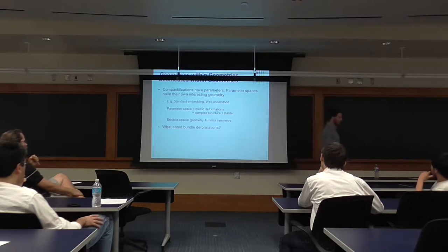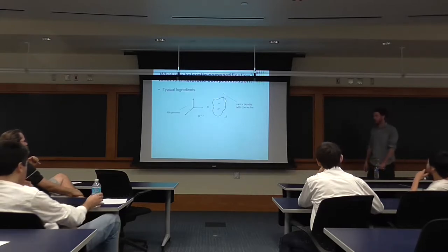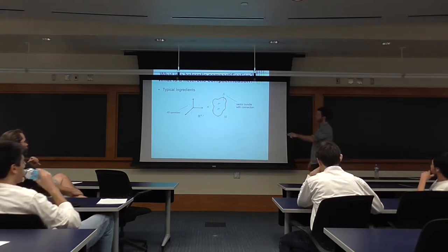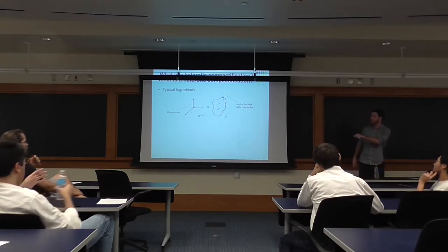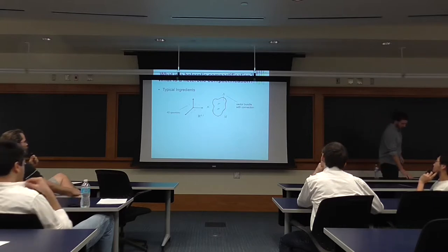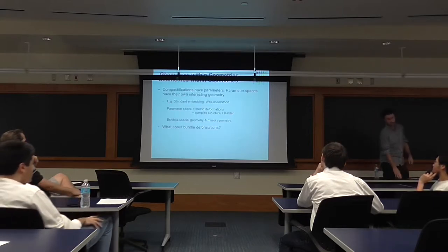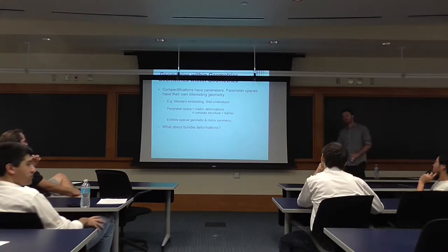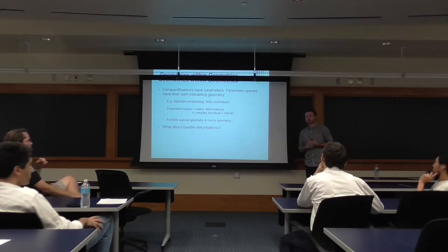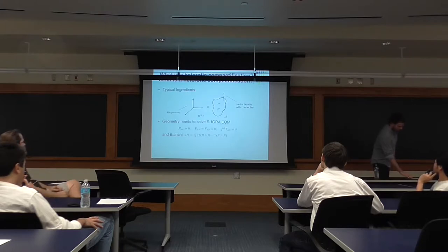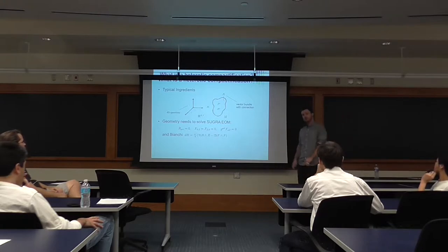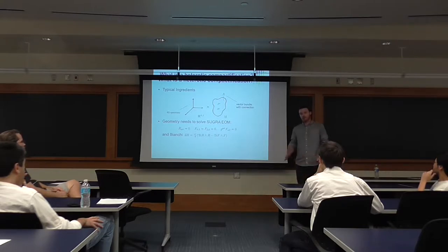But from the point of view of the heterotic string, the standard embedding is a very non-generic thing to do. In the heterotic string we've got a picture of a Calabi-Yau manifold with a bundle, and we want to deform not just the base space but also the bundle on top. I can fix the Calabi-Yau and think about deforming the vector bundle — any deformation that preserves the equations of motion. As long as you preserve the Bianchi identity and the equations of motion, that's all you're imposing. I'll be thinking about the smooth case.